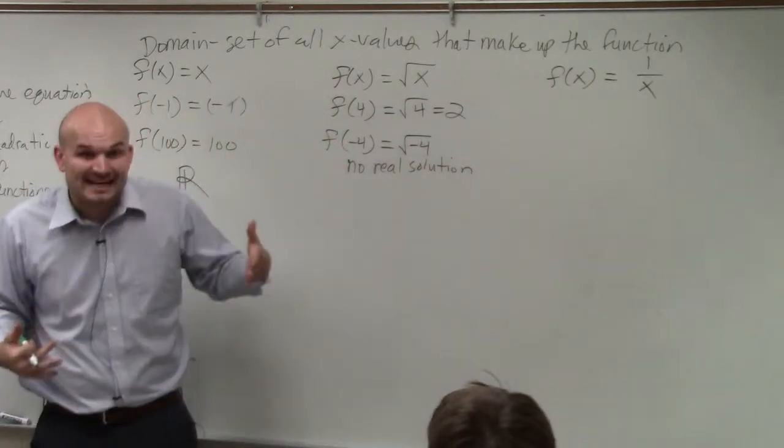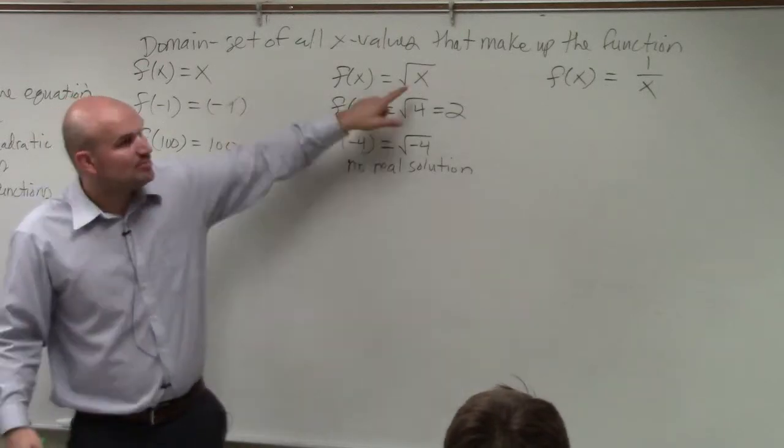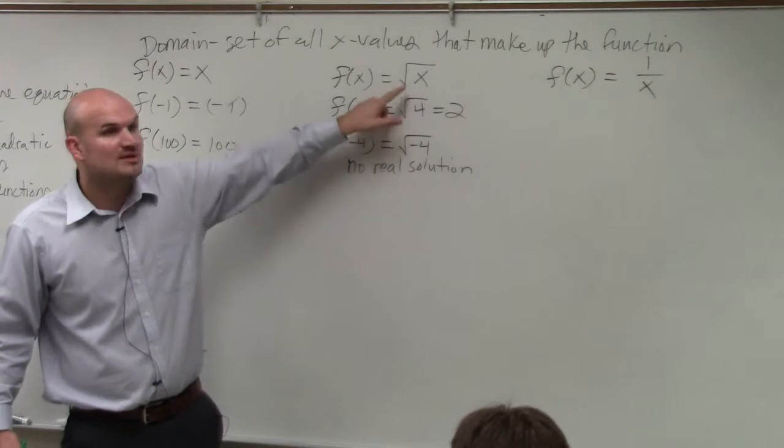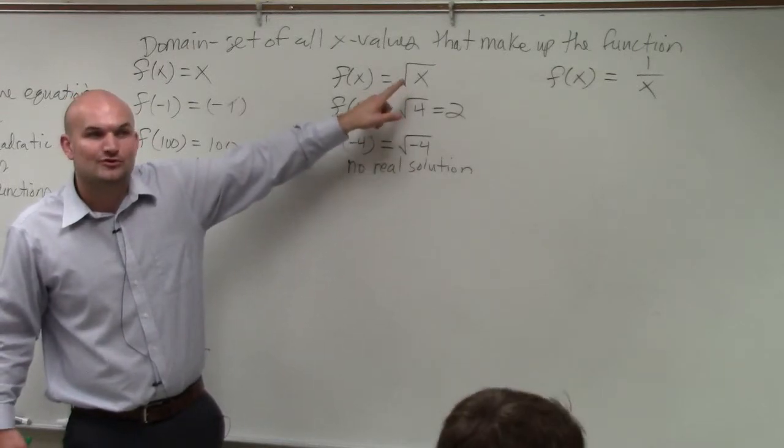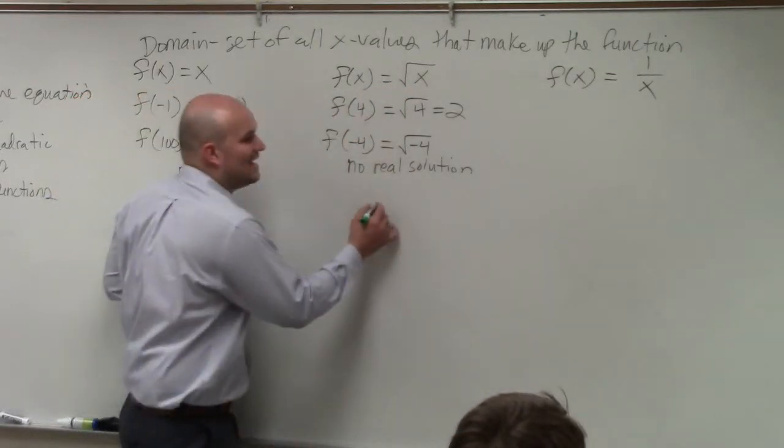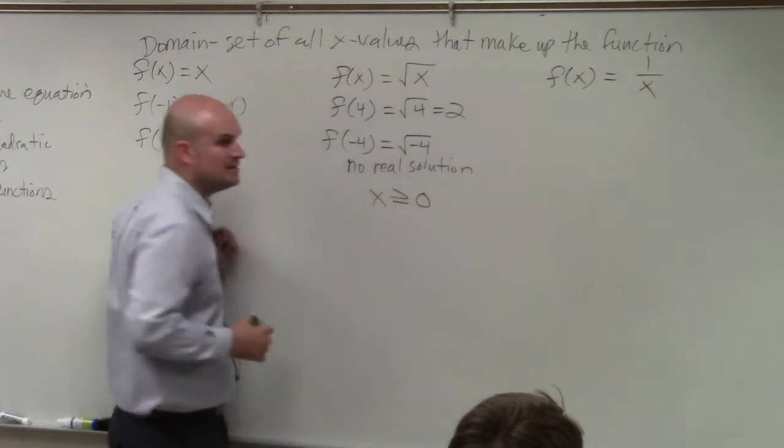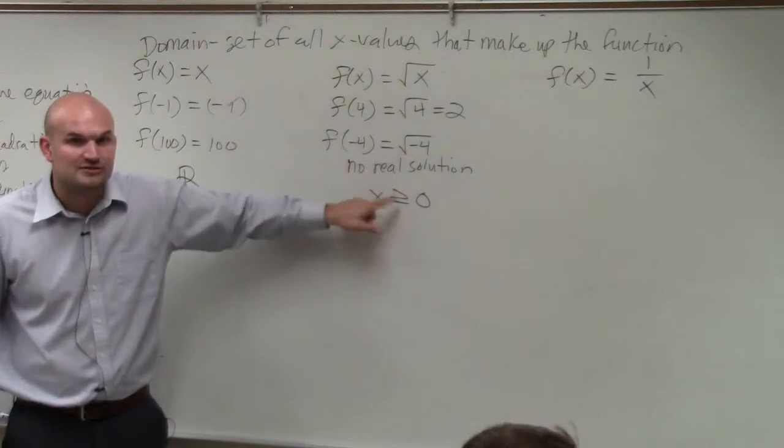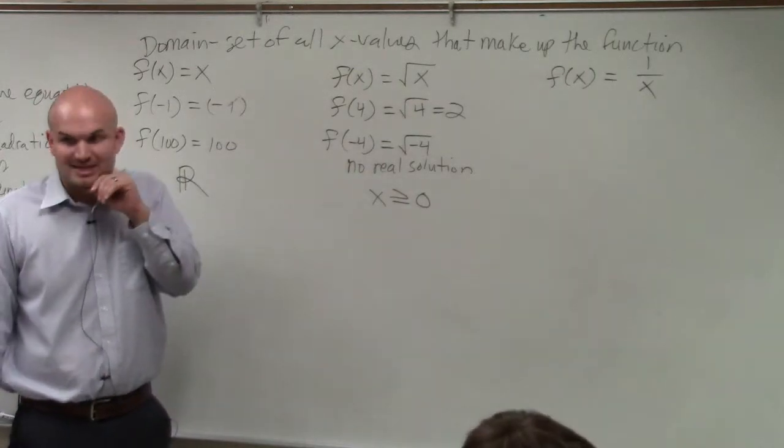So the domain is all the x values that you can plug into this function. Well, the domain for this is going to be all numbers that have to be positive. So we can write that as x is greater than or equal to 0. The domain is x is all values that are greater than or equal to 0. Does that make sense?